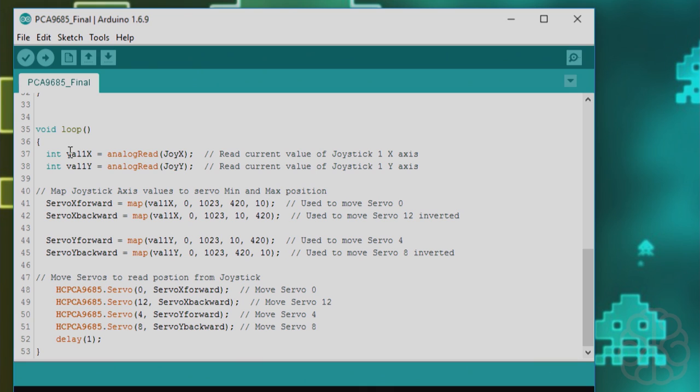The first thing we do is that we create two variables, val1x and val1y, which are going to analog read the joystick x-axis and y-axis. So we read the current value and put them in these variables here. Then we're mapping the joystick axis value to the servo min and max position.